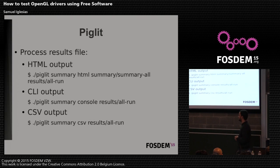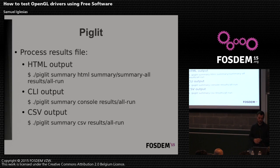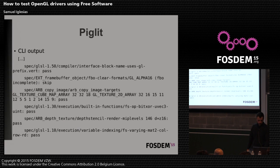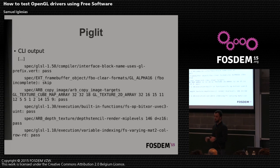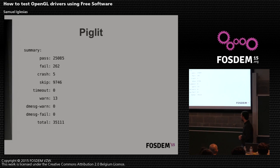Once you have the results — they are saved in JSON format — you can process them and read them in a more human-readable way. The first option is HTML output, which generates a website I'll show you later. Then there is command-line output, and also CSV file creation. This is an example of the command-line output: it specifies the name of the test and the result — pass, skip, crash, fail, warning, whatever. At the end you have a summary of the run — for example, 25,000 passed tests out of 35,000.